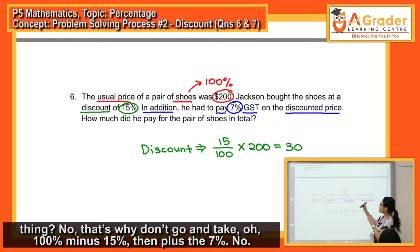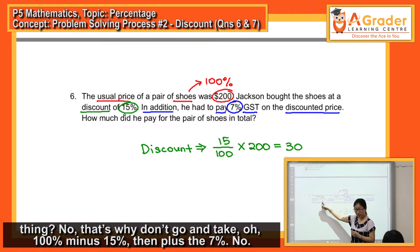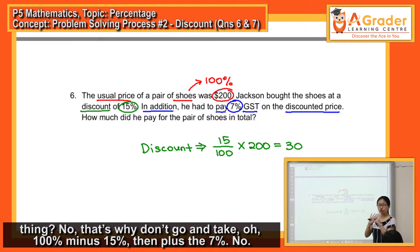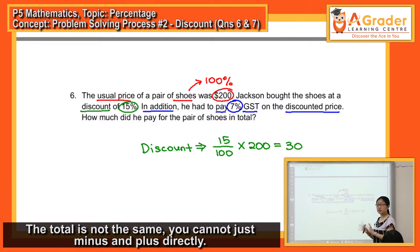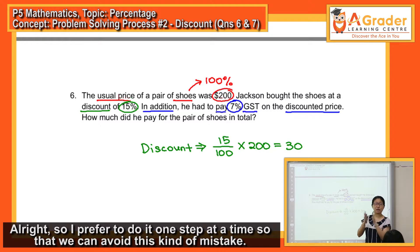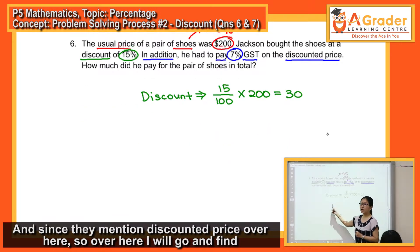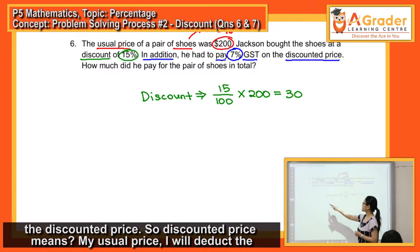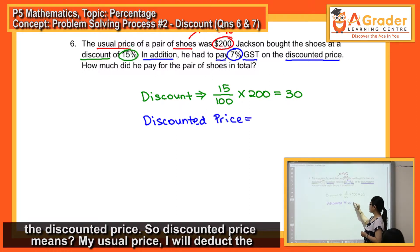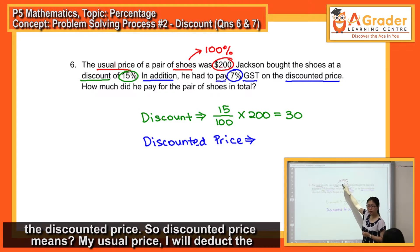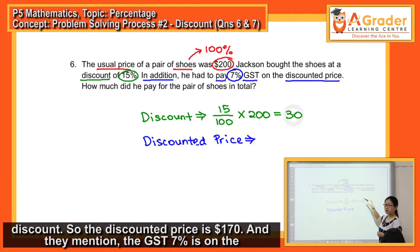That's why don't go and take, oh, 100% minus 15%, then plus the 7%. No. The total is not the same. You cannot just minus and plus directly. So, I prefer to do it one set at a time so that we can avoid this kind of mistake. And since they mentioned discounted price over here. So, over here, I will go and find the discounted price. So, discounted price means, my usual price, I will deduct the discount. So, the discounted price is $170.